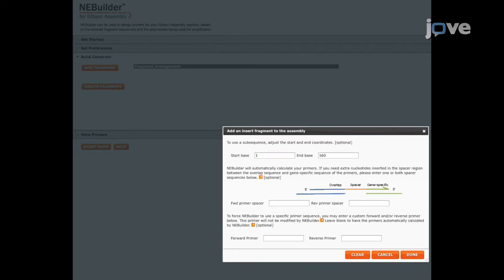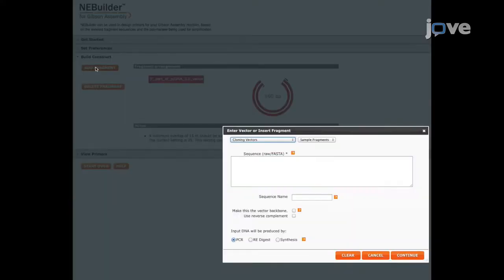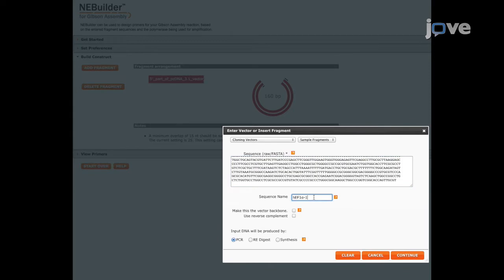If there is a need to add extra nucleotides or restriction sites at the junction of the final construct, then open the Add and Insert Fragment to the Assembly window. In the Forward or Reverse Primer Spacer areas, enter the extra nucleotides or restriction sites to only one of the DNA fragments. Then, click on the Done tab. Repeat for all of the fragments until the construct is complete.